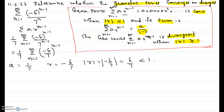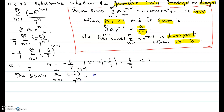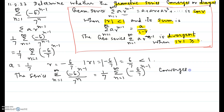The series converges and it converges to the sum a over 1 minus r. So the series sigma n from 1 through infinity of negative 6 to the power n minus 1 over 7 to the n, which we rewrote as 1 over 7 times sigma of negative 6 over 7 to the power n minus 1, converges.